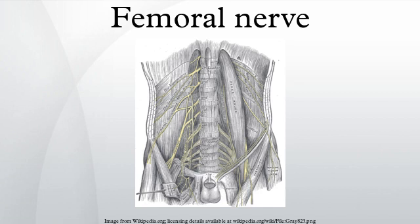The femoral nerve, the largest branch of the lumbar plexus, arises from the dorsal divisions of the ventral rami of the second, third, and fourth lumbar nerves.